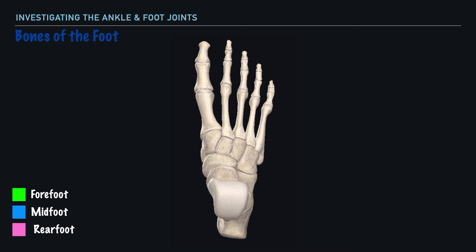Now as we start examining the foot, let's do so from a superior perspective. One of the first things we should do is identify which of the two feet is being examined. As shown here, we're looking at the right foot, considering the orientation of the great toe, which is along the midline of the body. So now that we've got our orientation situated, let's start labeling what we refer to as the rear foot and work our way anteriorly to identify the components of the midfoot and forefoot.